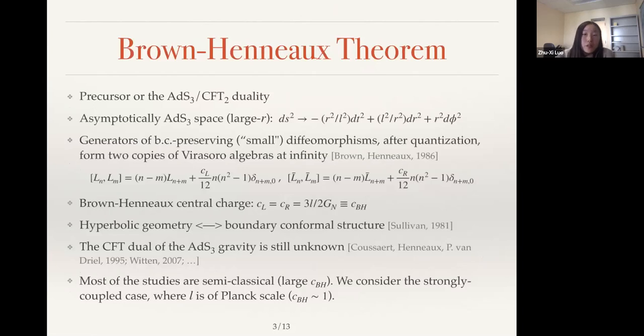So the Brown-Henneaux theorem is a precursor of the AdS3 CFT2 duality. If we look at the asymptotic, nearly asymptotic boundary, or near the space-time infinity, the metric that is asymptotically AdS3 is the following. The metric obtained from the AdS3 transformation acting on the metric must also be asymptotic AdS3. And generators of boundary condition preserving diffeomorphisms will form two copies of Virasoro algebra at infinity after quantization. So this is the content of the theorem. Basically, it says the asymptotic symmetry of AdS3 is the Virasoro symmetry. So there are two central charges, CL and CR. Gravitational layers are identified as 3L over 2GN. From now on, we'll call it just C, Brown-Henneaux, CBH.